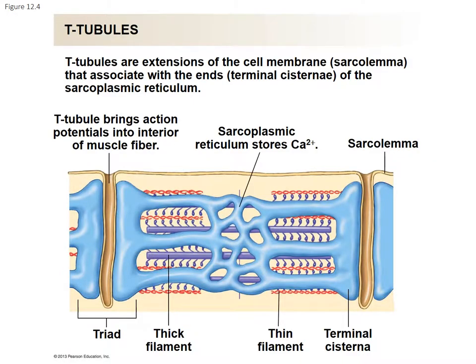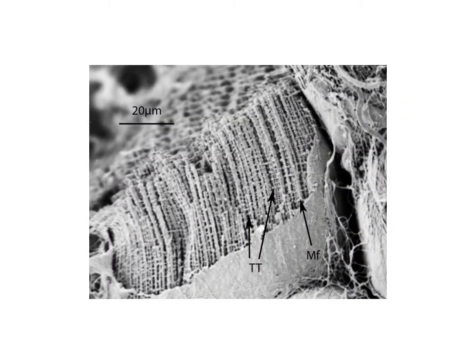The T-tubules are extensions of the cell membrane or sarcolemma that associate with the ends of the sarcoplasmic reticulum, called the terminal cisterna. The T-tubule functions to bring action potentials into the muscle fiber and activate the sarcoplasmic reticulum to release calcium. Here we can see a close-up view of the different muscle fiber cells.